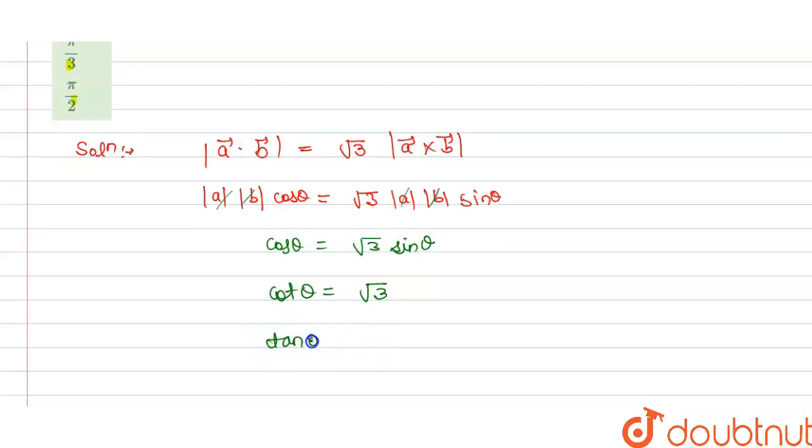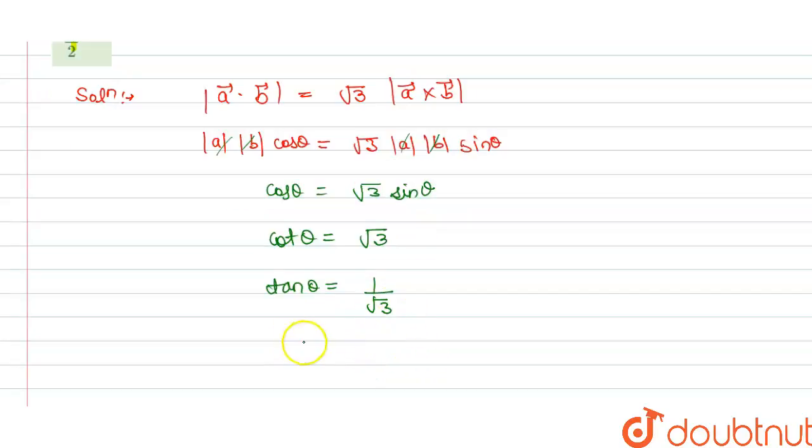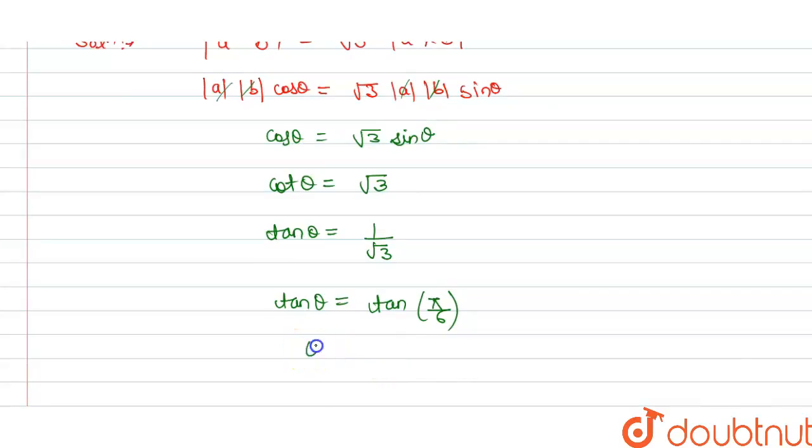And tan theta we know that tan is 1 by cot, that is 1 by root 3. And we know that this is equals to tan theta is equals to tan pi by 6. As we know that 1 by root 3 value is at pi by 6, so from this we get theta is equals to pi by 6.